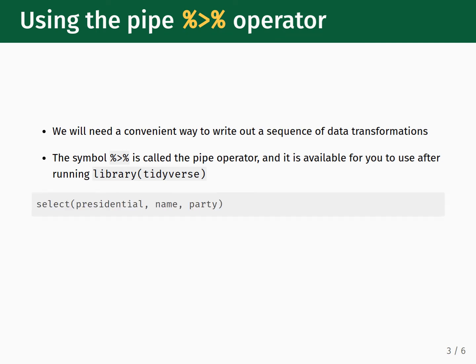We can rewrite the following function that selects the name and party columns from the presidential dataset to look like this. We have the presidential dataset piped into the select function. Notice that we do not need to put the word presidential into the parentheses of the select function — the pipe operator automatically passes the data frame into the select function.